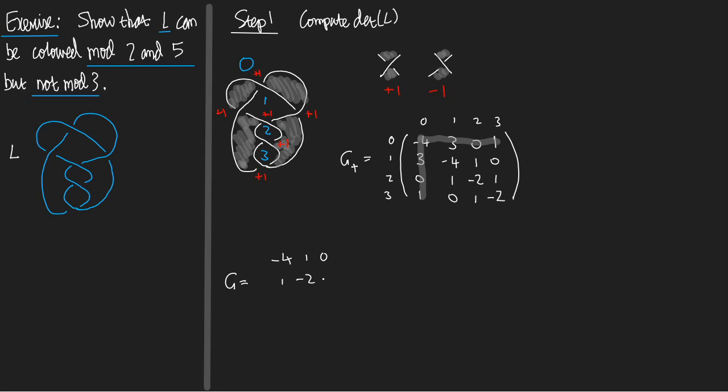So G is minus 4, 1, 0. 1, minus 2, 1. 0, 1, minus 2.